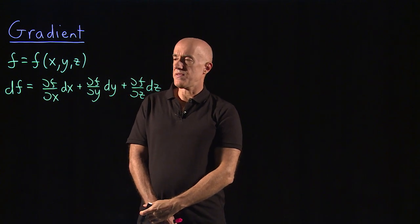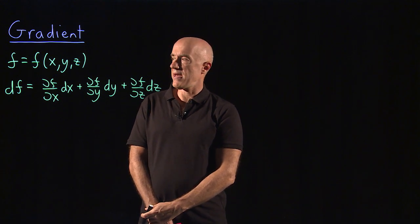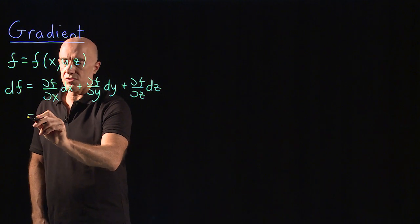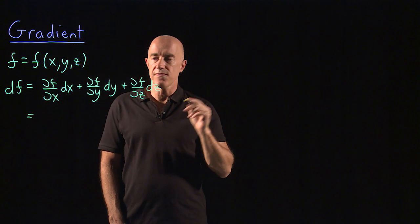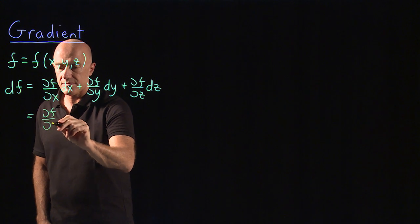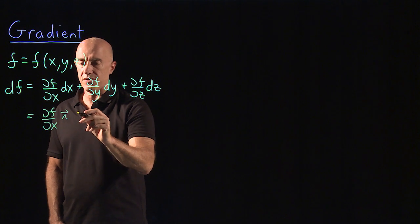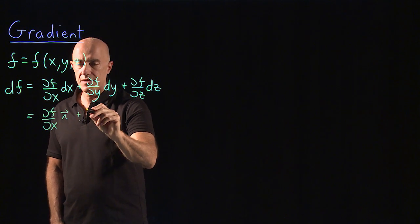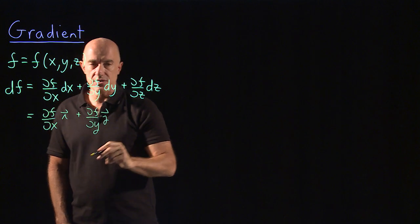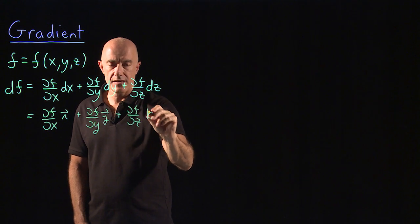Now I want to put this in vector notation. We can do that if we make use of the dot product. This is equal to the dot product of two vectors. The first vector is df/dx along the i direction, the x direction times the i unit vector, plus df/dy times the j unit vector, plus df/dz times the k unit vector.